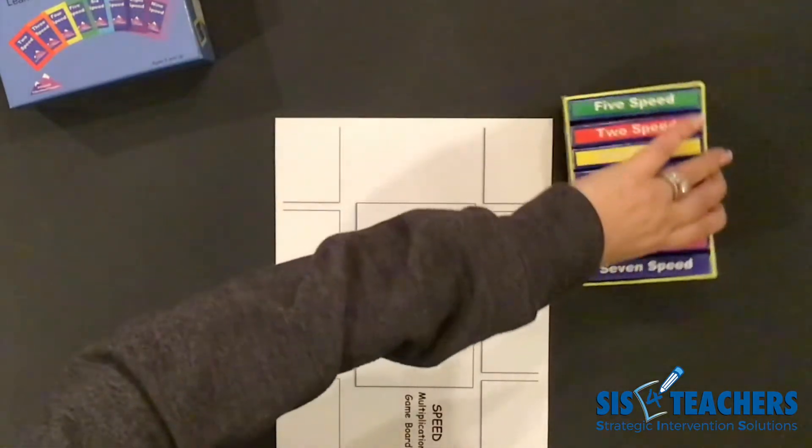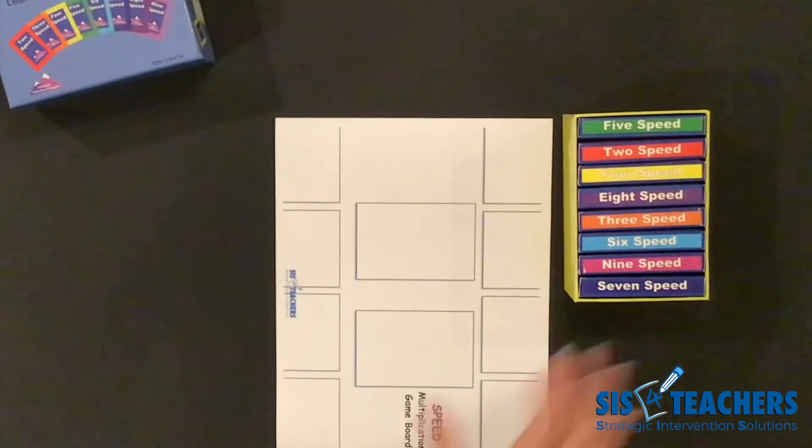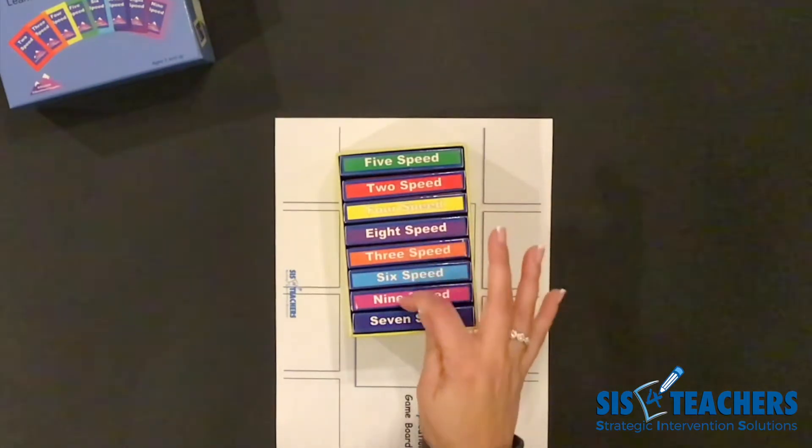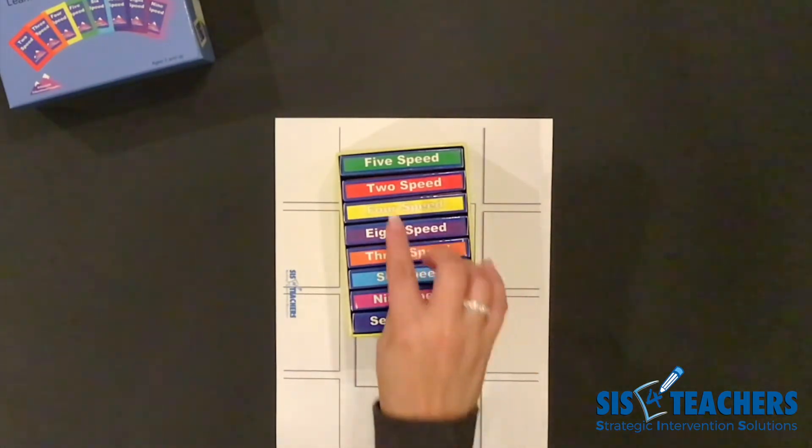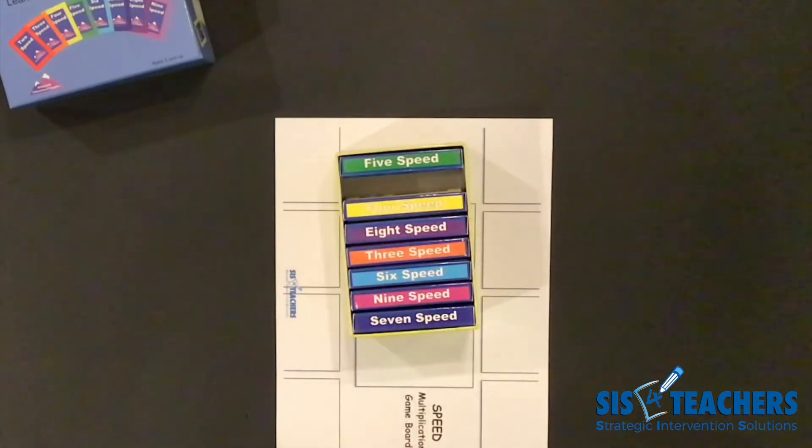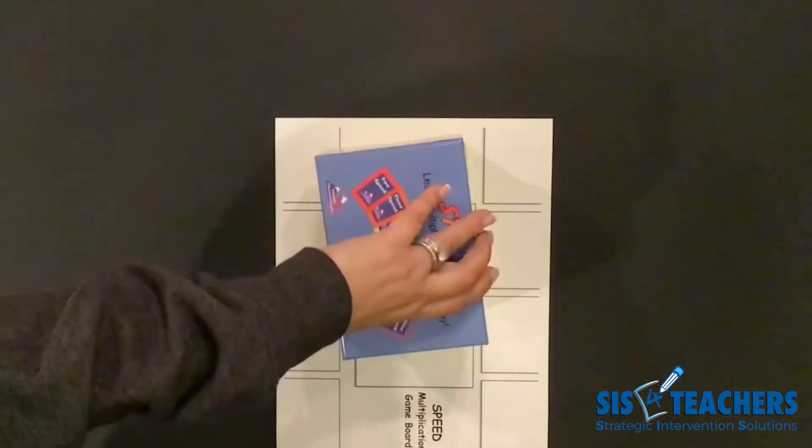We have our speed deck set up in the patterns of multiplication, as we would learn them from our 10s and 5s, 2, 4, 8, 3, 6, 9, and 7. So we're going to start off with the 2s, because my partner and I have gotten really good at the 5s and the 10s.